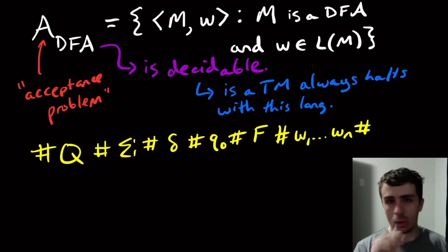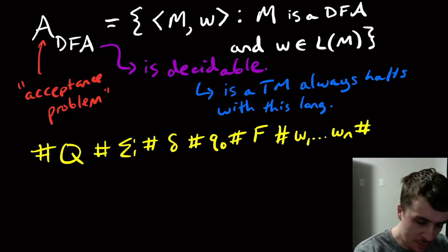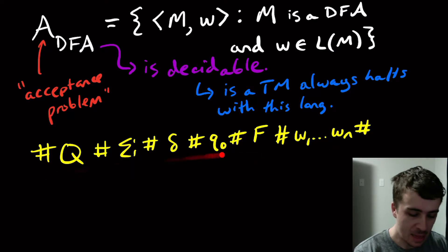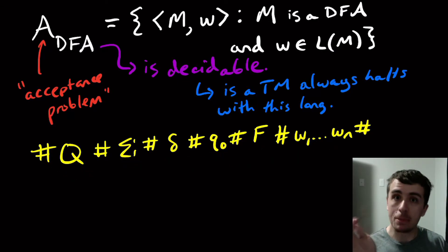And then I put w1 through wN over here. And there was an issue that we had to resolve last time where we had to convert everything into zeros and ones, but let's just assume that we handled all that. Well, how do we figure out if this thing is accepted by this thing?